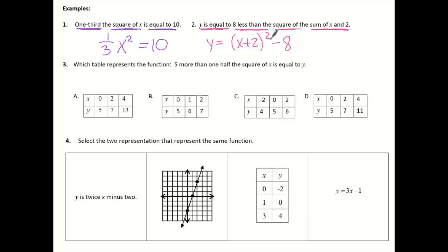Number 3, which table represents the function 5 more than 1 half the square of X is equal to Y? So again, when I have 5 more than, kind of like my 8 less than, I'm going to wait a second. One half of, what am I one half of yet? The square of. Again, at the square of X, I mean one half the square of X is equal to Y. So the square of X I'm going to write first. Then I'm going to take one half of it, and it's 5 more than that.